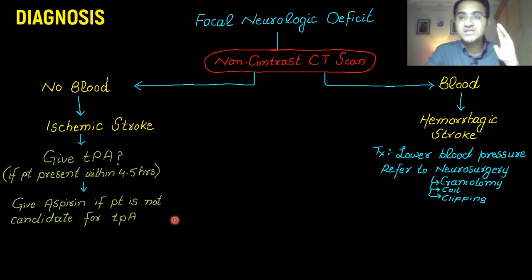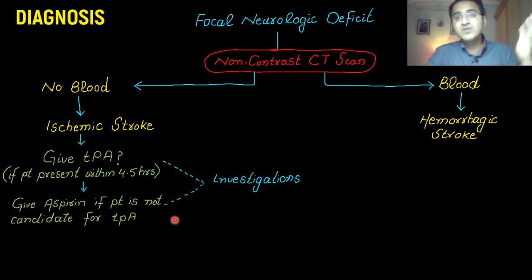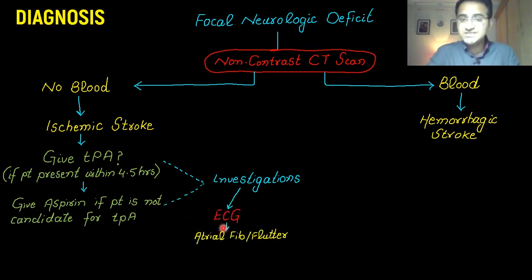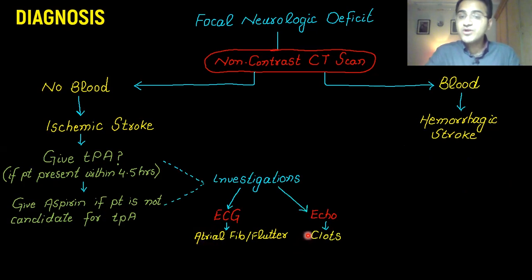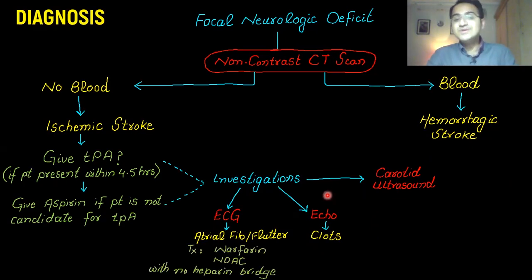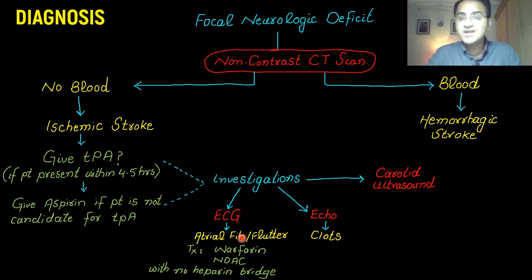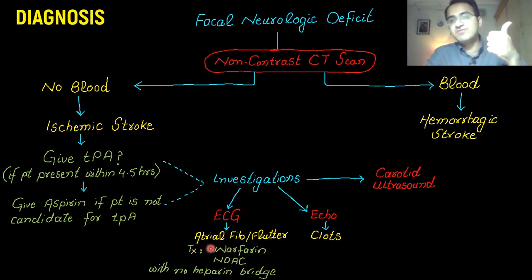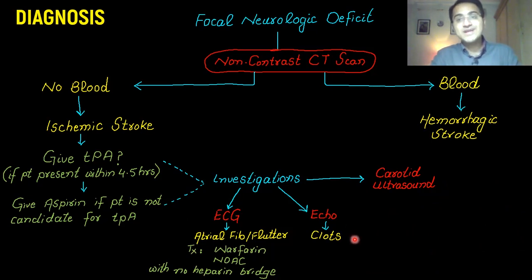Either the same day or the next day, investigations are done to find the cause and prevent recurrence. The most important is an ECG to look for atrial fibrillation or atrial flutter, which can cause embolic stroke. An echocardiogram looks for clots, and carotid ultrasound looks for atherosclerosis. If ECG shows atrial fibrillation or flutter, start the patient on anticoagulants — warfarin or a novel oral anticoagulant. In these patients, no heparin bridge is needed.